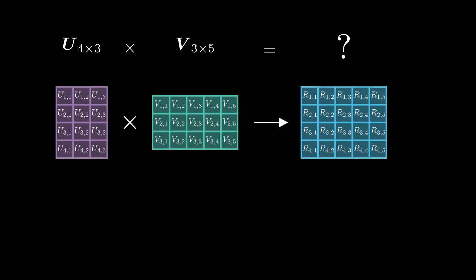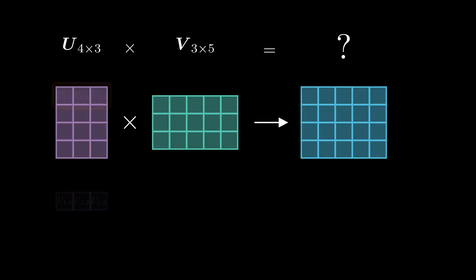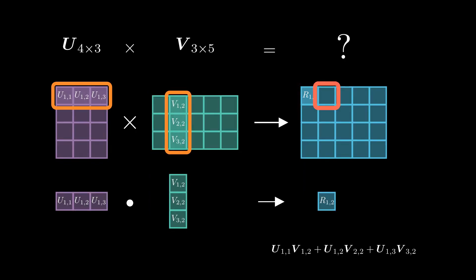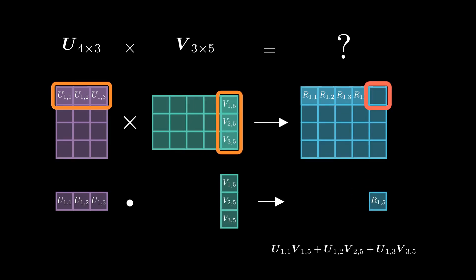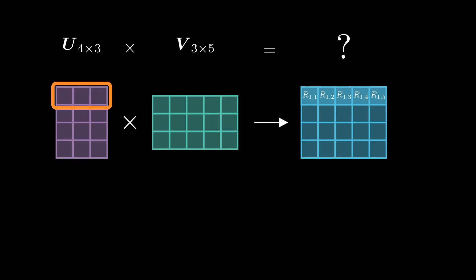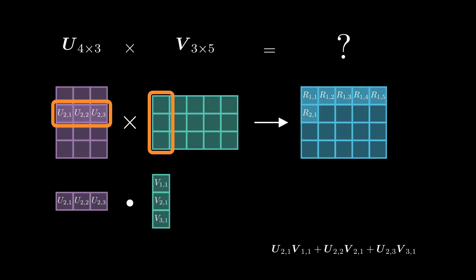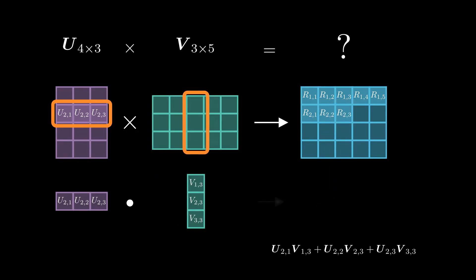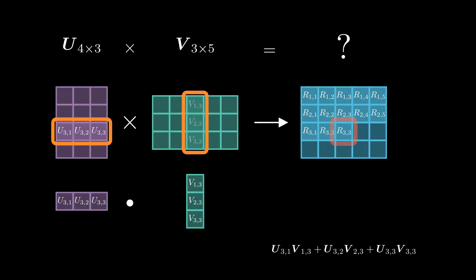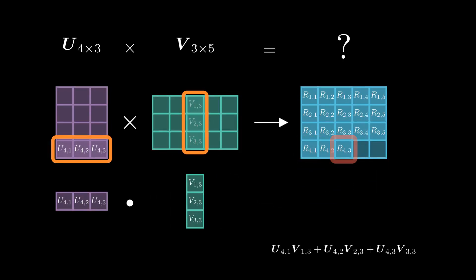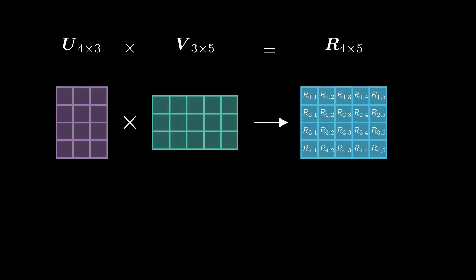Let's see another example with known dimensions. We have matrix U of size 4 by 3 and matrix V of size 3 by 5, so the resulting matrix will have dimensionality 4 by 5. We start by taking the first row of U and going through all columns of V one at a time to calculate one element of the result. After finishing the first row, we move to the second row of U and calculate the dot product with all columns of V, repeating for the third and fourth rows. The resulting matrix R has size 4 by 5.